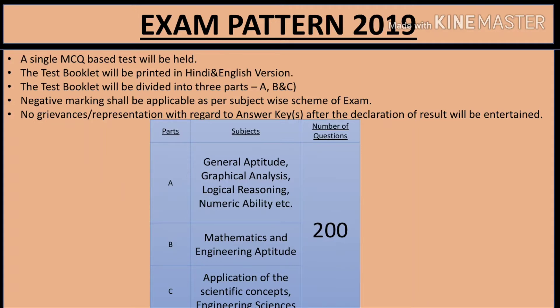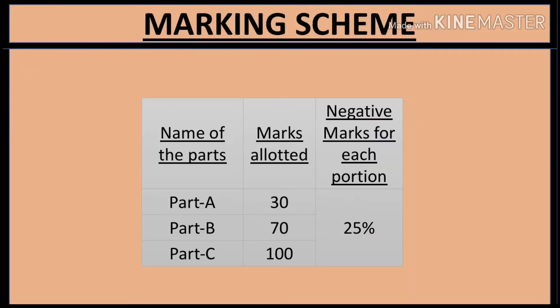The exam is of 200 marks total. The subjects covered include general aptitude, graphical analysis and logical reasoning, numerical ability, mathematics and engineering aptitude, and the application of scientific concepts in engineering sciences. These topics come across the three parts of the exam for which you need to prepare.